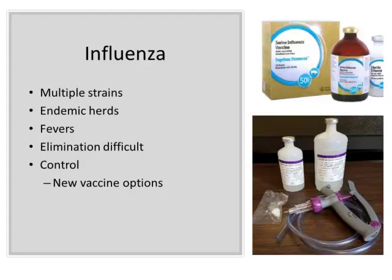Influenza is certainly frustrating — we get that fever event, and especially those late-bred sows that have the stress of being late-bred, we do see sows that die and sows that abort. Flu has unfortunately become pretty endemic in herds with multiple strains circulating — elimination has been really tough. It'll be interesting to see if new vaccine technologies like Boehringer Ingelheim's modified live or the Optimmune intranasal vaccine can have a better effect on reducing those dramatic flu breaks and fever events that can lead to sow mortality.